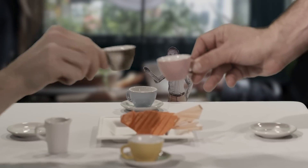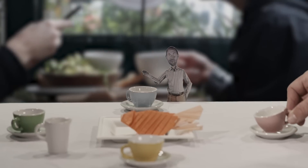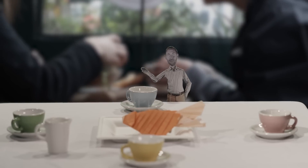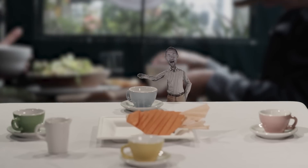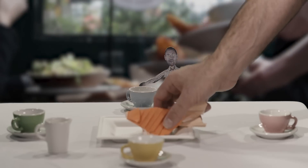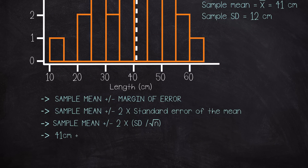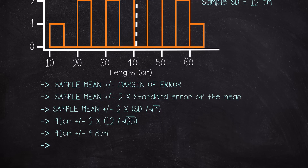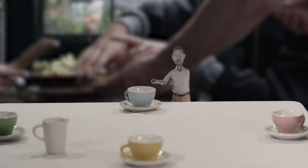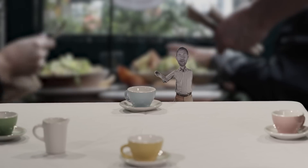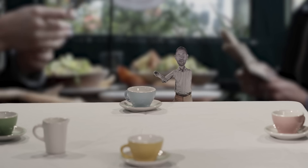Be careful! Relying solely on the p-value can be a dangerous thing, as it does not allow us to make any statements about the precision of our estimate. To strengthen our analysis, we should also construct a confidence interval for the mean. We would say that we are approximately 95% confident that the true mean length of fish in this lake is between 36.2 and 45.8 centimeters. The entire range of acceptable values are all above the null value of 35 centimeters, which is in line with our conclusion that the true mean is greater than 35 centimeters.